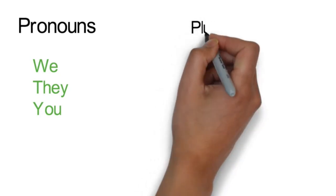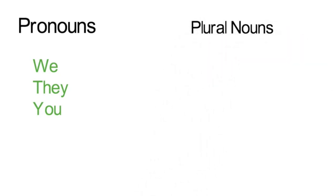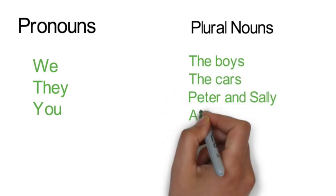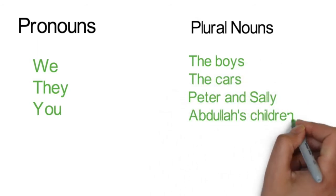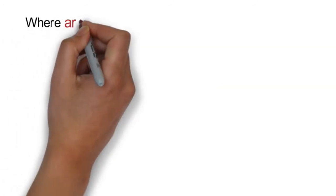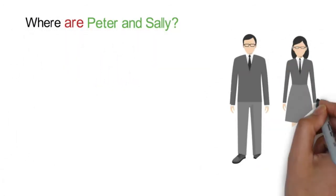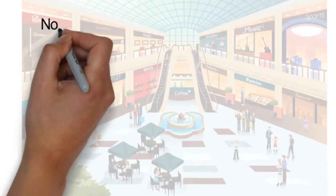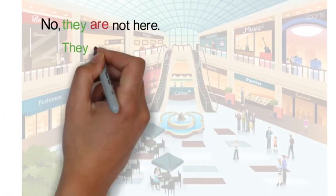For nouns and pronouns such as we, they, and you, and plural nouns such as the boys, the cars, Peter and Sally, Abdallah's children, we need to use the form are. For example: Where are Peter and Sally? Are they here? No, they are not here. They are at the mall.